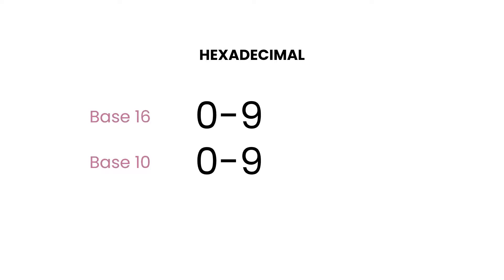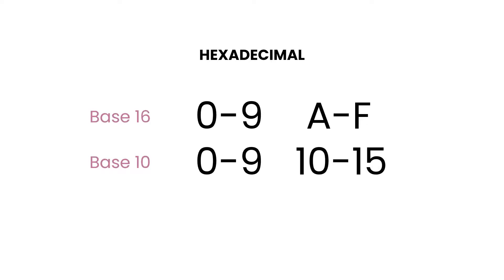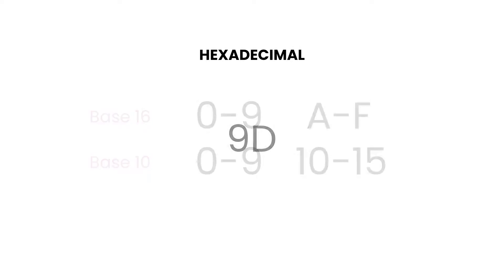The last base we're going to be looking at today is hexadecimal. Hexadecimal is base 16, which means we have 16 different digits to represent a number. As with base 10, we have 0 through 9, and then A to F to represent decimal numbers 10 through 15. The advantage to using hexadecimal is that it uses far fewer digits to represent the same number compared to other bases like decimal, and it's easy to convert from binary to hexadecimal, so that makes for great shorthand.